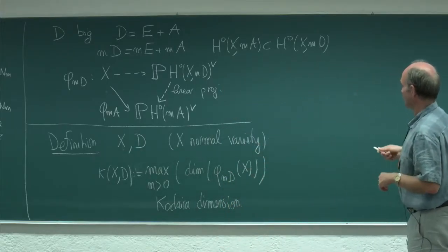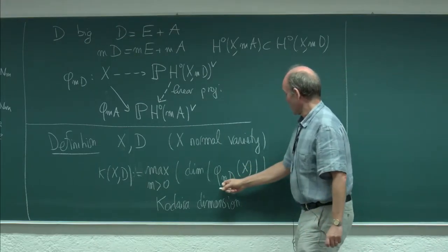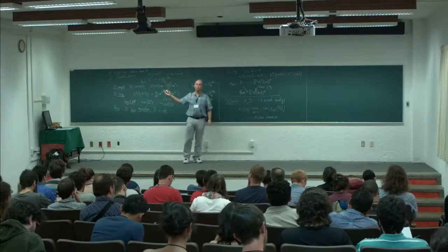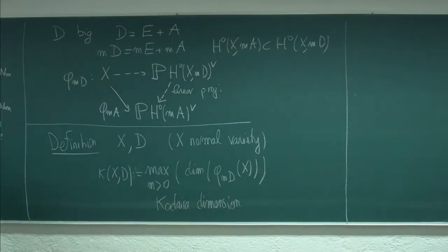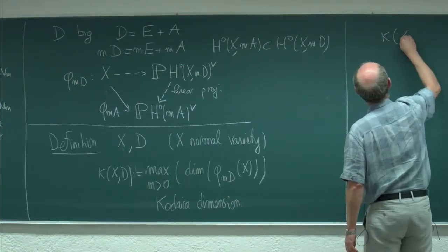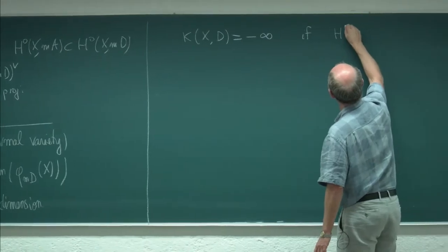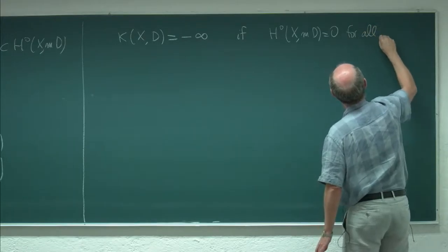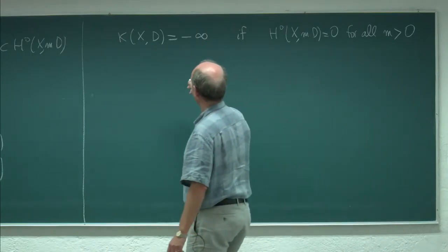There are two extreme cases. This rational map is only defined when h0 is nonzero. It may happen that all these numbers are zero, in which case these maps are never defined. As a convention, we decide the Kodaira dimension is negative infinity if H^0(X, mD) = 0 for all m.